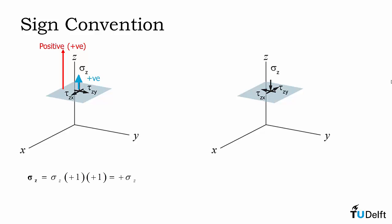So our stress becomes sigma z magnitude of sigma z multiplied by positive 1 multiplied by positive 1 which gives us a positive normal stress.